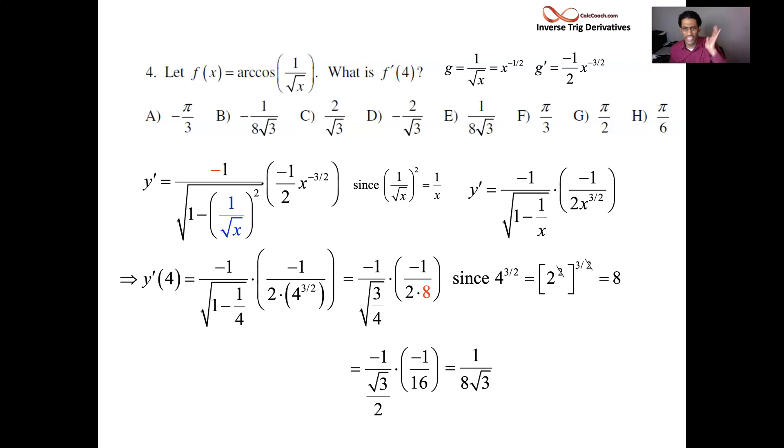Arc cosine of 1 over root x's derivative at 4 is 1 over 8 root 3. Multiple choice letter E. Okay. So, we've had a full video on arc cosine. And we're now going to move into our last video, which is a full video on arc tangent.